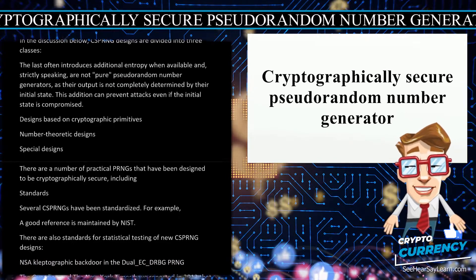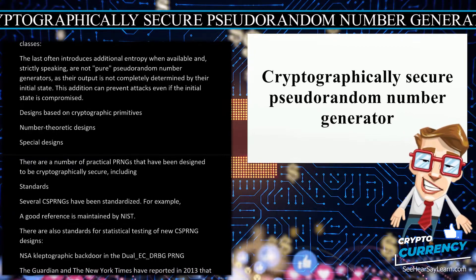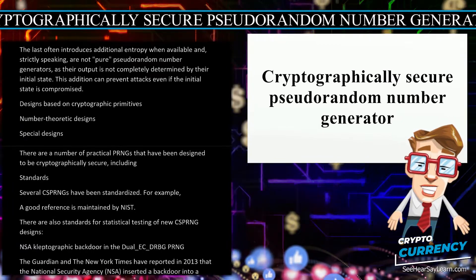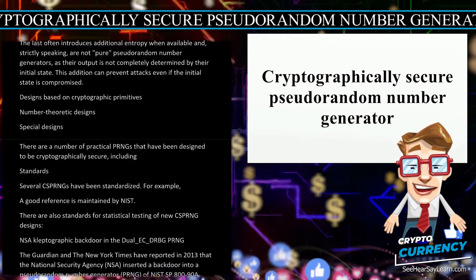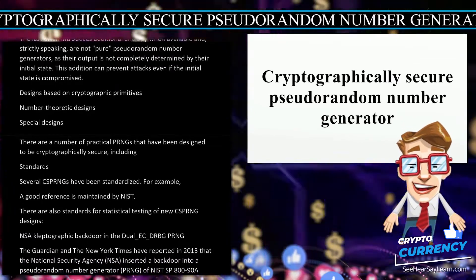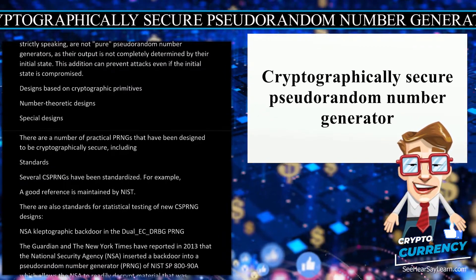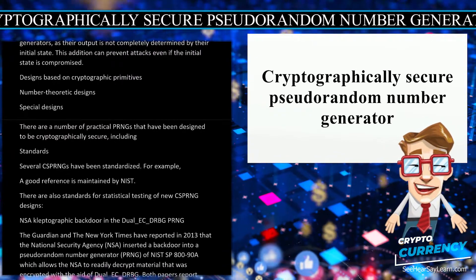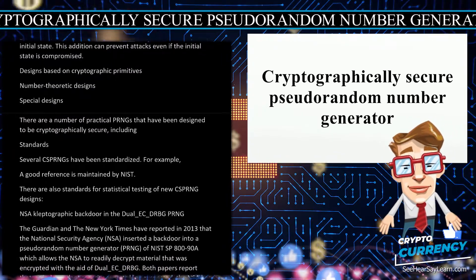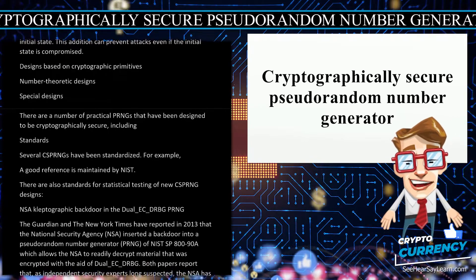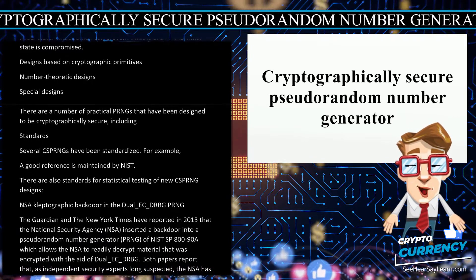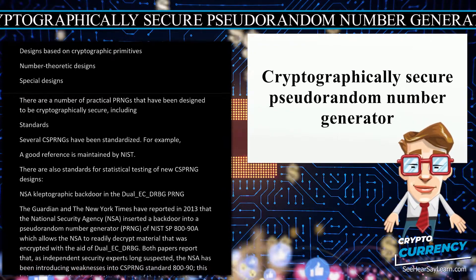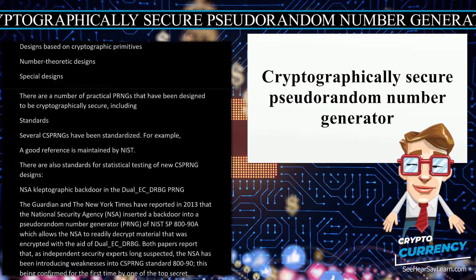CSPRNG designs are divided into three classes. The last class often introduces additional entropy when available and, strictly speaking, are not pure pseudo-random number generators, as their output is not completely determined by their initial state. This addition can prevent attacks even if the initial state is compromised. Design classes include those based on cryptographic primitives, number-theoretic designs, and special designs. There are a number of practical PRNGs that have been designed to be cryptographically secure, and several CSPRNGs have been standardized, with a good reference maintained by NIST. There are also standards for statistical testing of new CSPRNG designs.